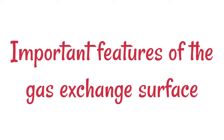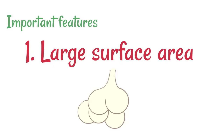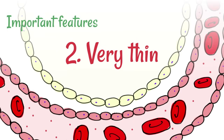There are some important features of the gas exchange surface that you need to know. First, it has a large surface area, provided by the particular shape of the alveoli and by the fact that there are lots and lots of them inside the lungs. It's also very thin, which provides a short diffusion pathway — the lining is only one cell thick.